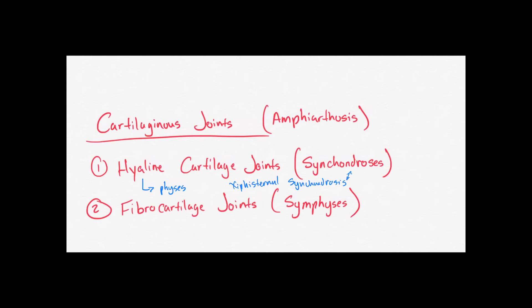The last type of cartilaginous joint is the fibrocartilage joints, or the symphysis. An example of a fibrocartilage joint is the manubrial sternal symphysis.